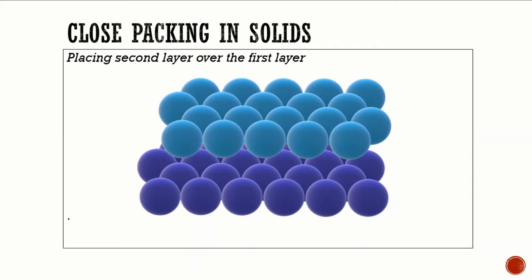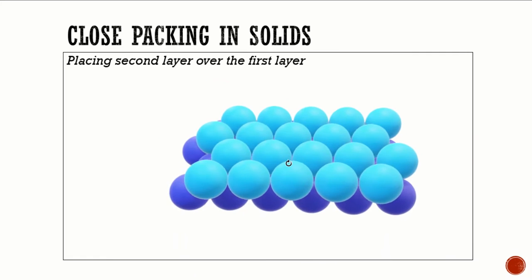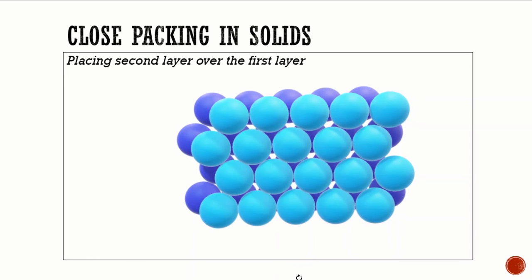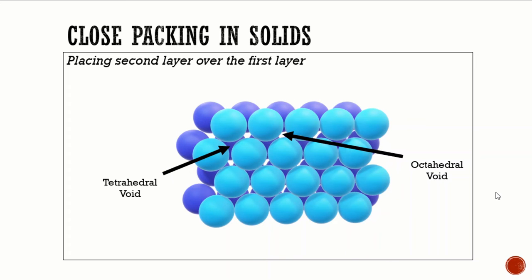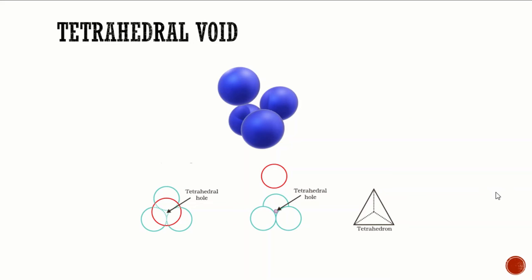Taking a two-dimensional hexagonal close-packed layer A, we place a similar layer above it such that the spheres of the second layer are placed in the depressions of the first layer. The spheres of the two layers are aligned differently, so we call the second layer B. Not all the triangular voids of the first layer are covered by the spheres of the second layer. Wherever a sphere of the second layer is above a void of the first layer, or vice versa, a tetrahedral void is formed.